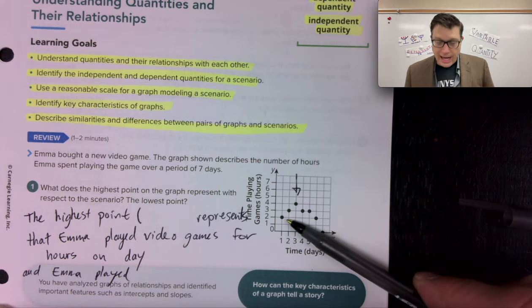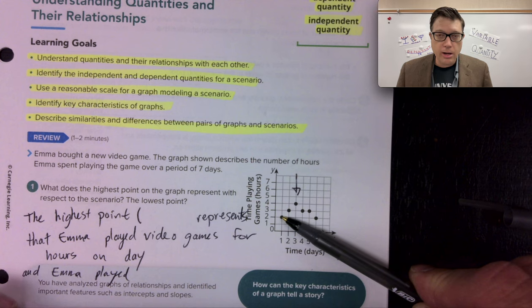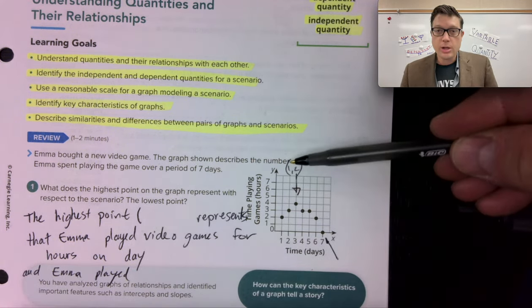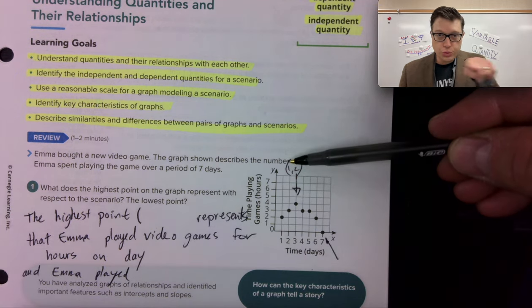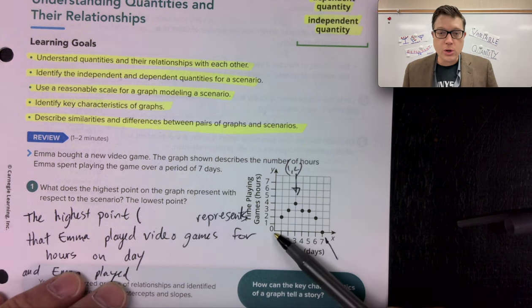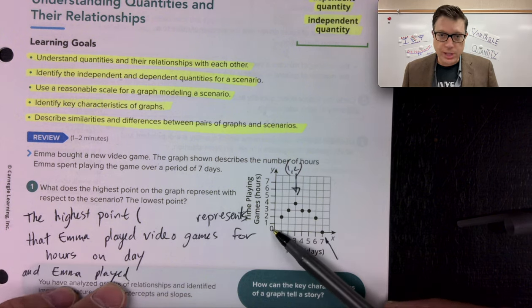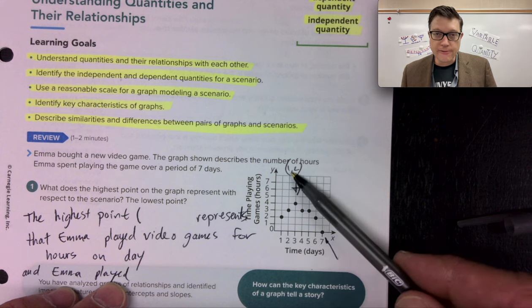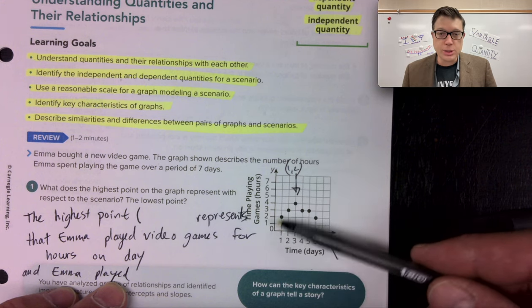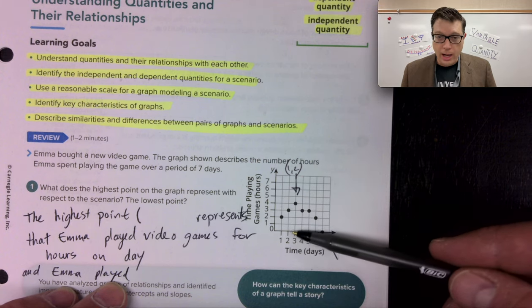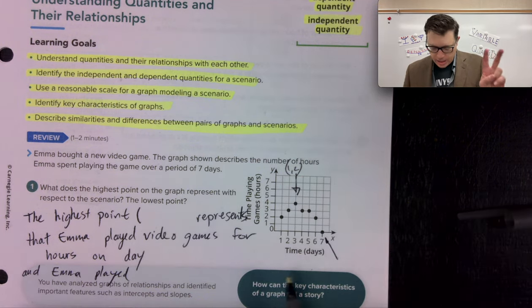So on this graph, this point right here is the coordinate one, two, because we go left and right first. And then the second number is up and down. So to start from the corner here of zero, zero, we would go to the right one. That's why the one is there first. And then we would go up two spaces. The next coordinate, she played for two hours. She played on the second day. That's right. Using my information. Second day, she played for three hours.